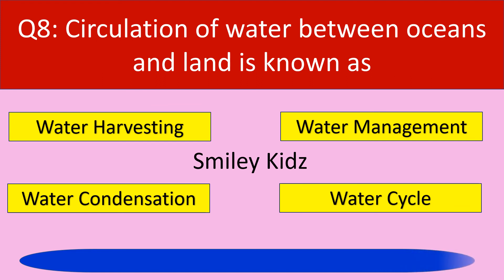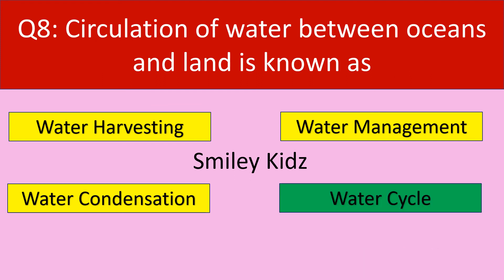Time is up and the correct answer is water cycle. Circulation of water between oceans and land is known as water cycle.